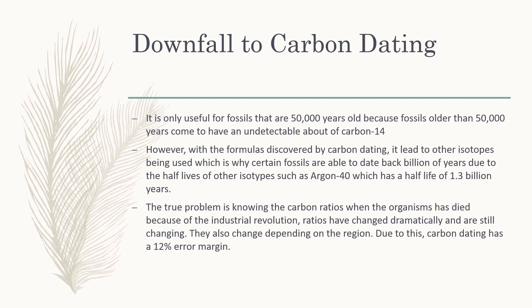Also, because the amount of carbon-12 to carbon-14 has varied greatly during past years — especially because of the industrial revolution, when a lot of pollution was in the air — the ratio started changing dramatically. Through this formula, there is about a 12% error margin, meaning that 88% of the time the formula will work, but you shouldn't fully depend on it to date fossils and bones, especially past 50,000 years old.